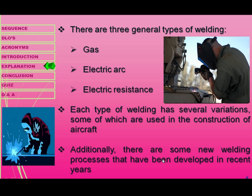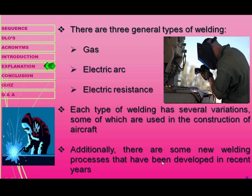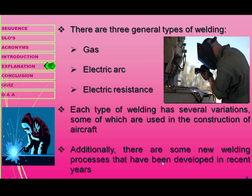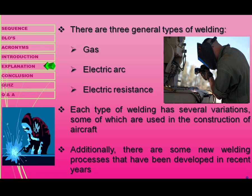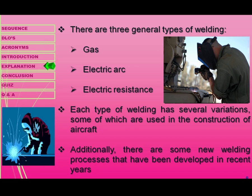When we differentiate welding into general types, we have three categories: gas welding, electrical welding, and electrical resistance welding. Each type has several variations, some of which are used in the construction of aircraft and some in maintenance. Additionally, there are new welding processes that have been developed in recent years.